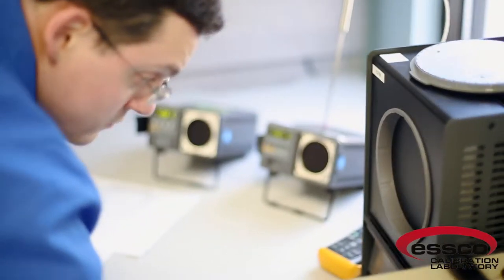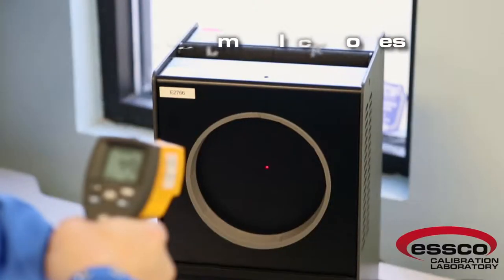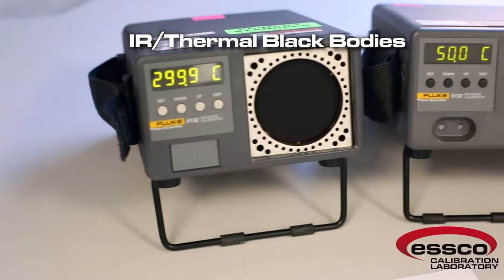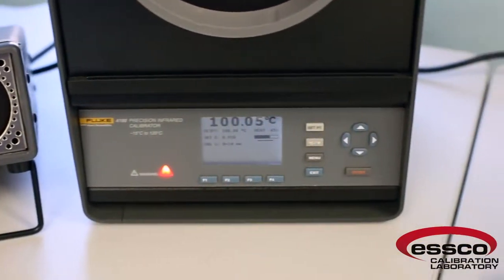In addition to temperature probes, we also calibrate non-contact IR guns and cameras from minus 15 to 500 degrees C, with an accuracy of plus or minus 0.5 to 8 degrees C, depending on the range.